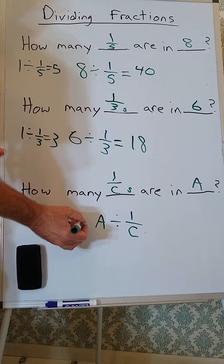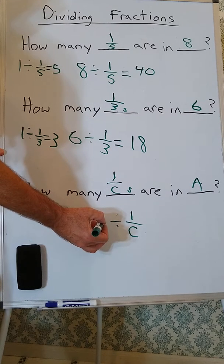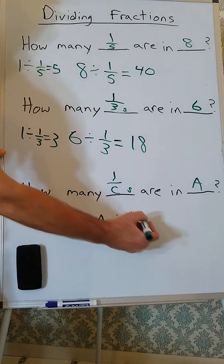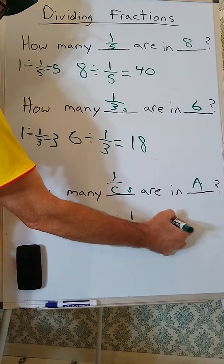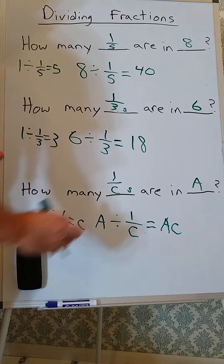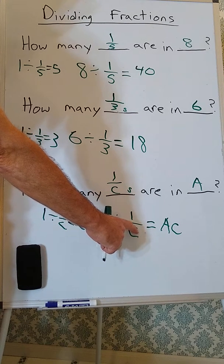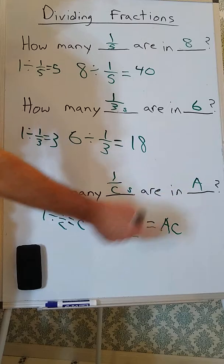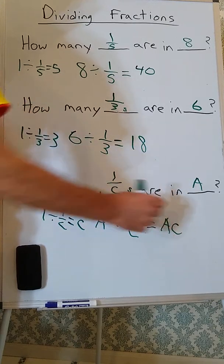So there are going to be c of these in each one, and if we have a of them, we're going to be multiplying a times c. So, a divided by 1 over c is equal to a times c.